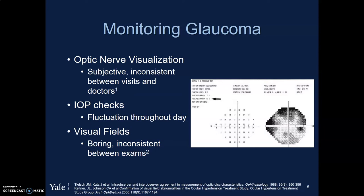To monitor glaucoma, we have a couple of different options. First and foremost, looking at the actual optic nerve helps us identify glaucomatous changes early, whether it be disc hemorrhages, cupping, excavation, or notching. Unfortunately, there is some subjectivity to this, and there is evidence to suggest inconsistency between visits and between different doctors. Even though fundus photography allows us to take pictures of the nerve, it's still not able to capture the three-dimensionality of the nerve.